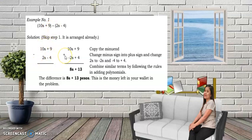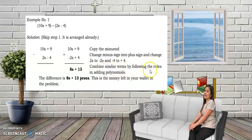Change all the signs of the subtrahend: 2s becomes negative 2s, and negative 4 becomes plus 4. So we change minus into plus and change plus to minus. After that, combine similar terms by following the rules in adding polynomials.